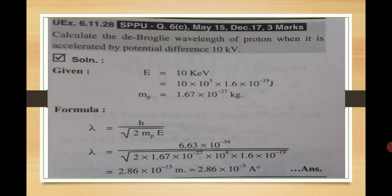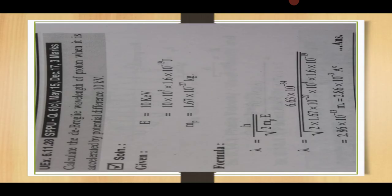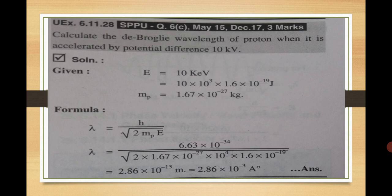One more problem for the proton: accelerated by a potential difference of 10 kilovolts, so energy is 10 kilo electron volts. Putting all values and calculating, we get lambda = 2.86 × 10⁻¹³ meters. So, whatever microscopic particles — neutron, proton, or electron — according to de Broglie's hypothesis, as energy is increasing, lambda will be decreasing.